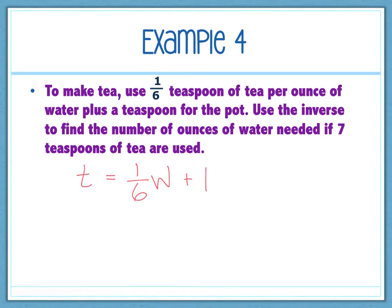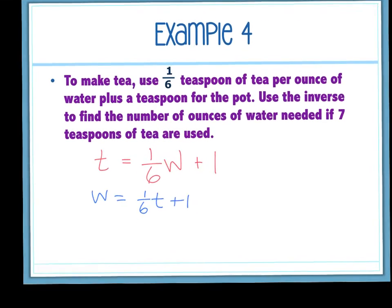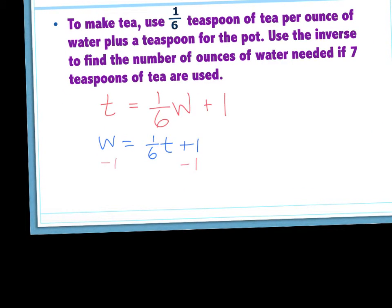Okay? Now if I'm finding the inverse of that, I do the same thing we did before. I switch the variables. So this is W equals one-sixth T plus one. And then subtract the one. And how do I get one-sixth T to be just T? Good. Multiply by six on both sides. So this is the inverse of that function. So if this was T of X, this would be T negative one of X. And it says, use the inverse to find the number of ounces of water needed if seven teaspoons of tea are used. So how much water do I need if seven ounces of tea?